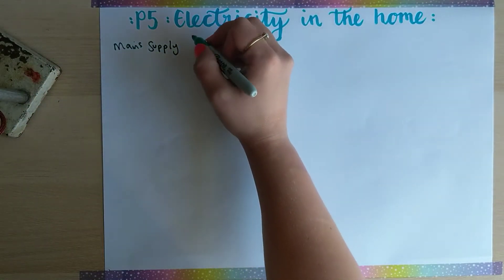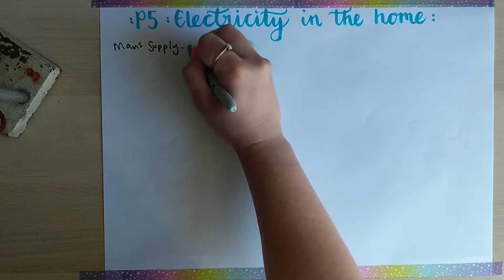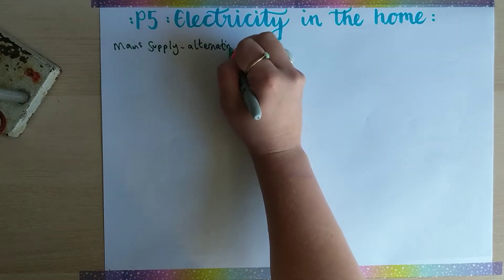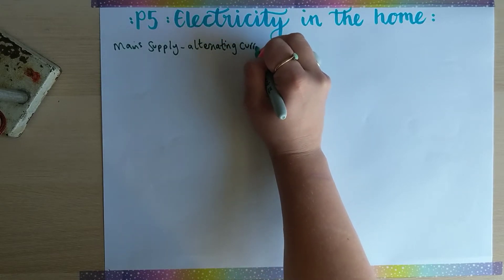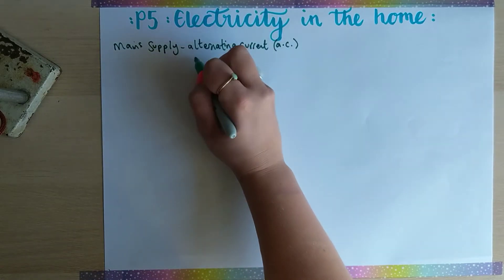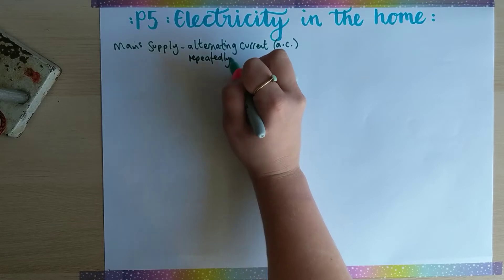The UK mains supply is alternating current, sometimes written as AC, and what alternating current means is it repeatedly changes direction.